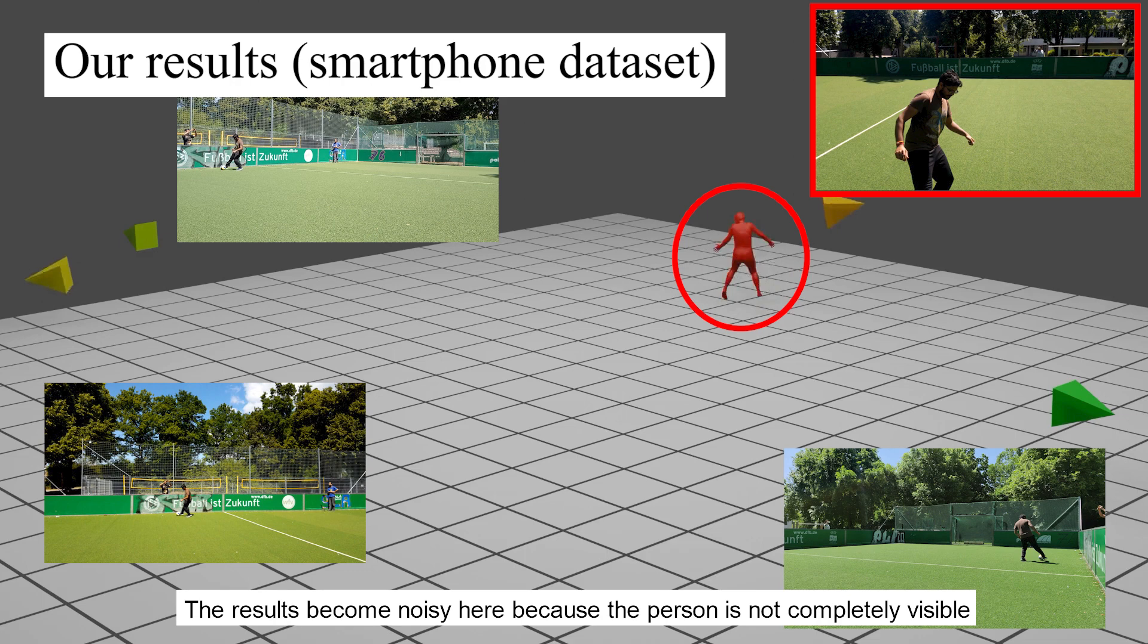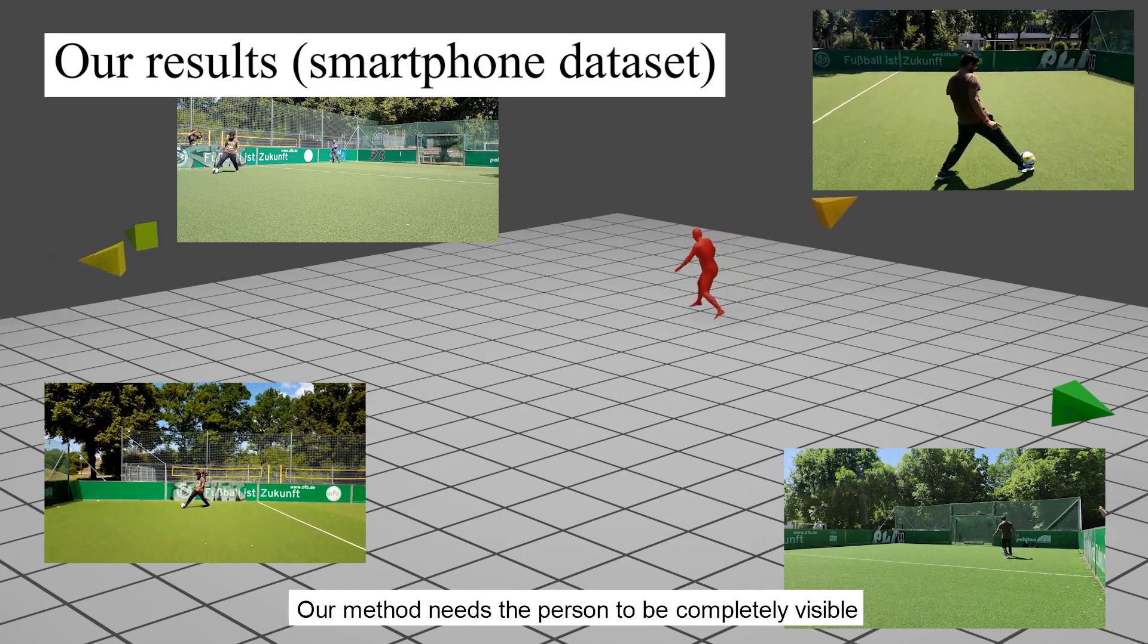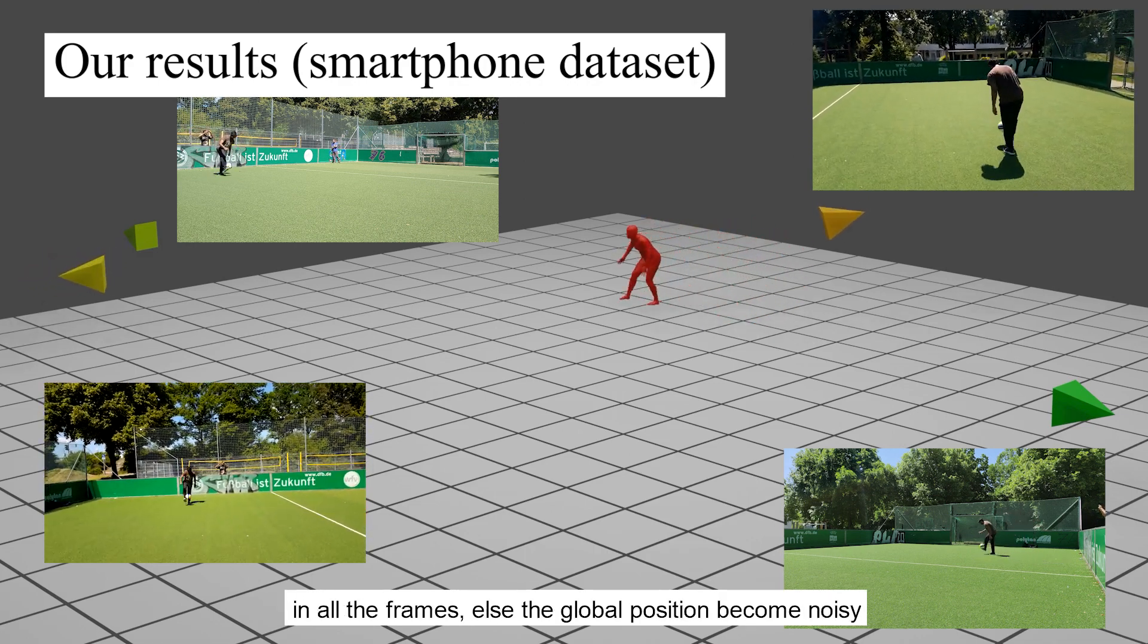The results become noisy here, because the person is not completely visible in one of the moving cameras shown on the top right corner. Our method needs the person to be completely visible in all the frames, as the global position becomes noisy.